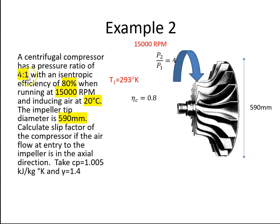So what are we given? We're told the pressure ratio is 4 to 1, so P2 over P1 is equal to 4, with an isentropic efficiency of 80%, so Eta C is 0.8. It's running at 15,000 RPM. The inducing air is 20 degrees Celsius, which is 293 degrees Kelvin, and we're told that the diameter here is 590 mm.